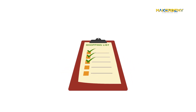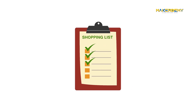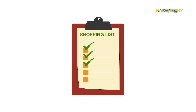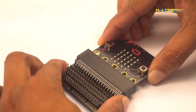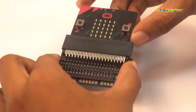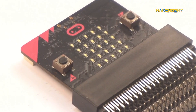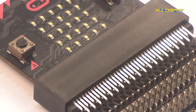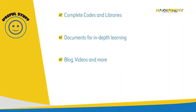You may go through the components list given in the resources to get a section-by-section breakdown along with links to buy them. The most essential components for this course are the micro:bit itself and a nifty add-on called an edge connector breakout board. This connector allows you to interface external peripherals onto the micro:bit more easily.